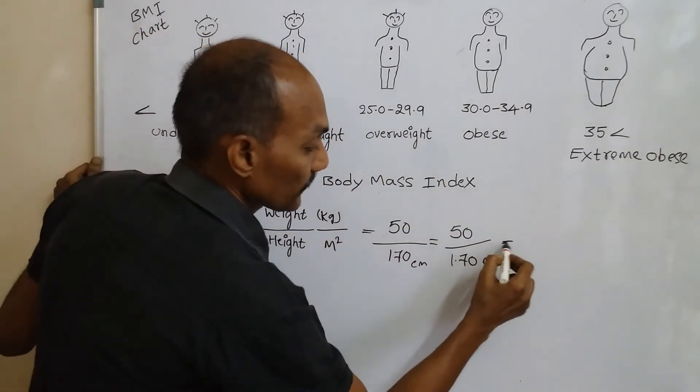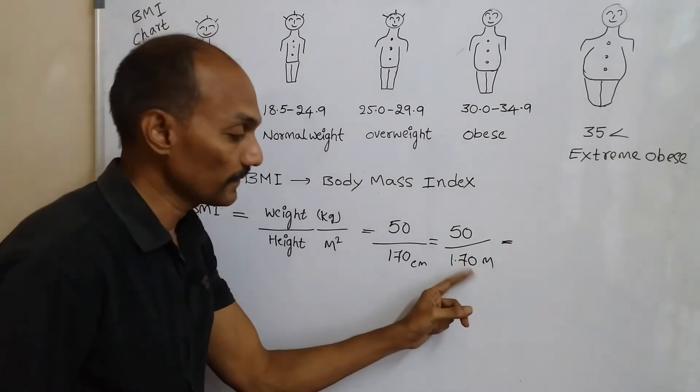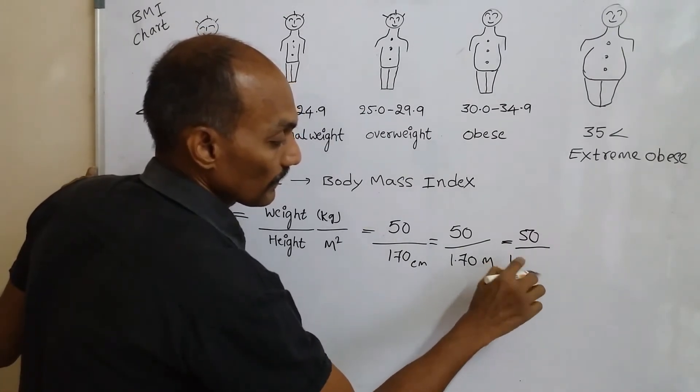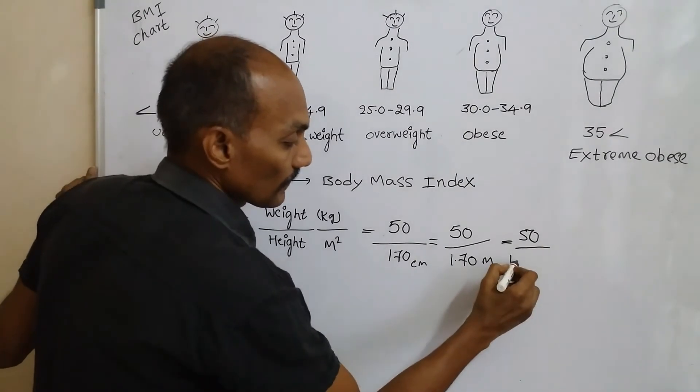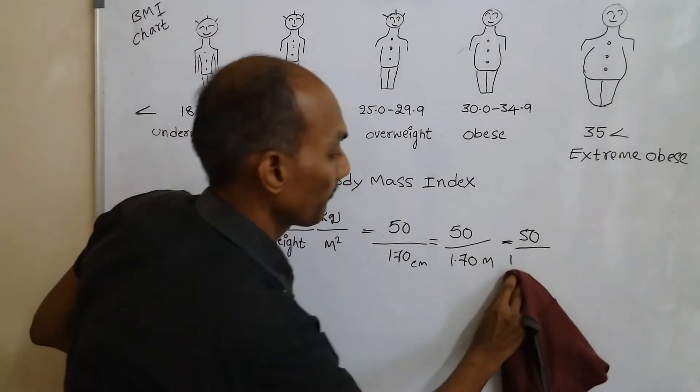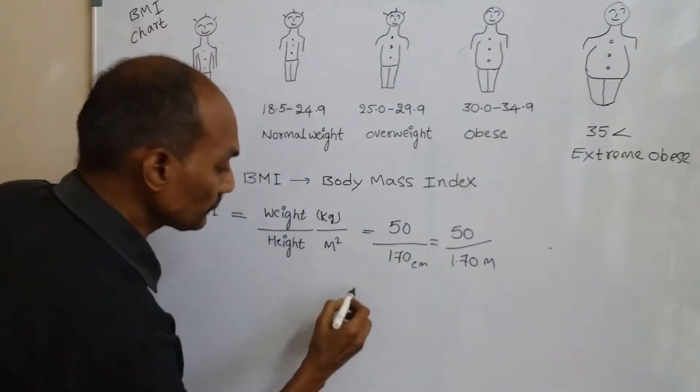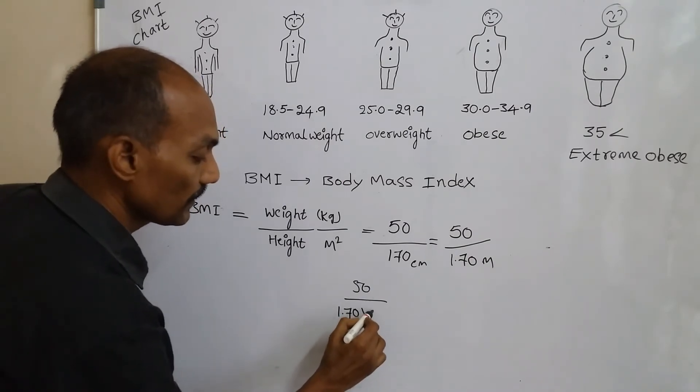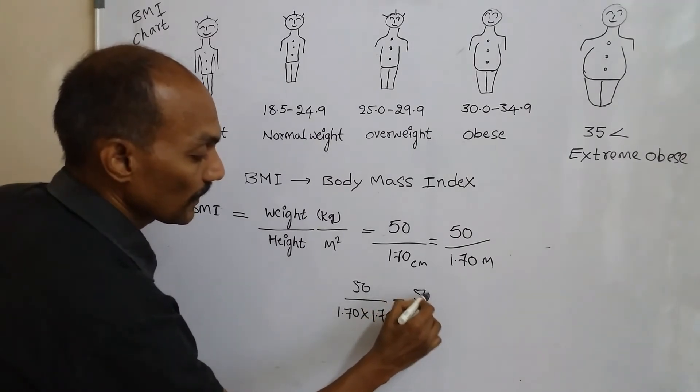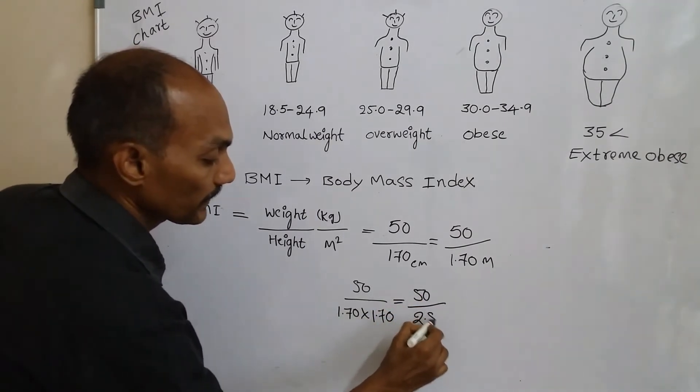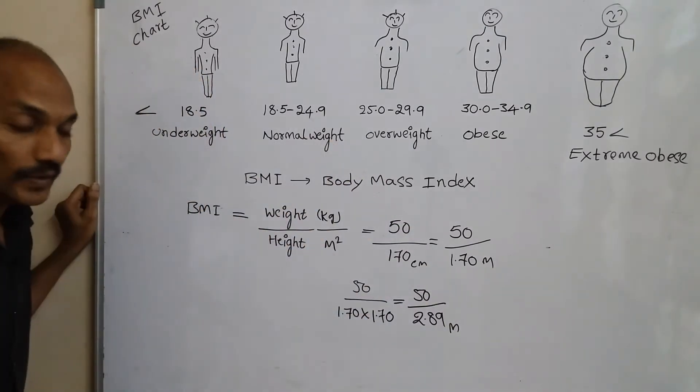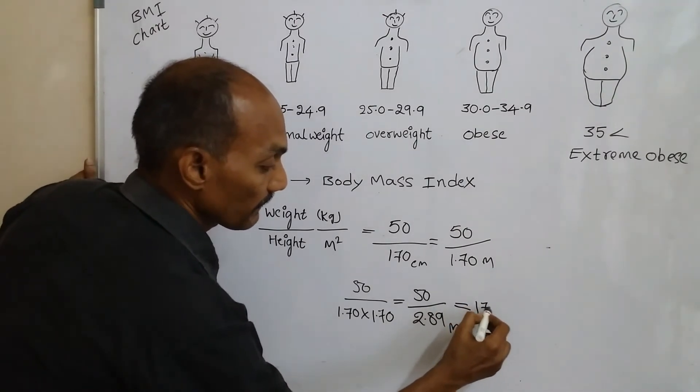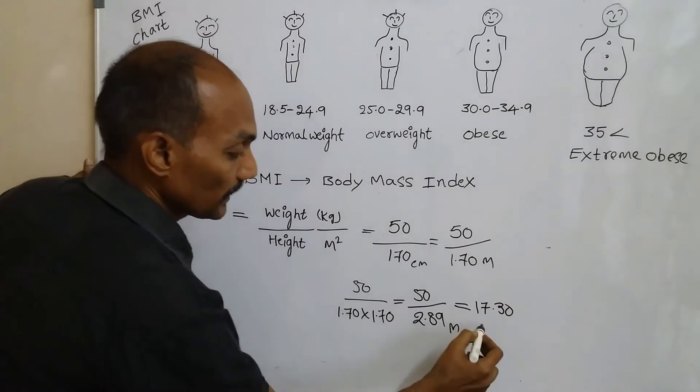Then we multiply it by itself. So here 50 divided by 1.70 times 1.70 equals 50 divided by 2.89 meters. So the person's BMI is 17.30.